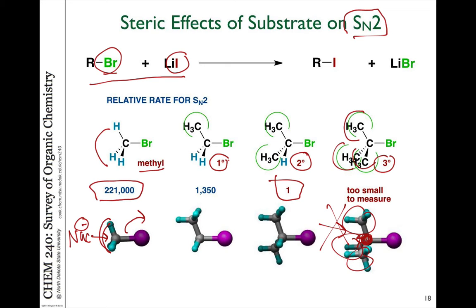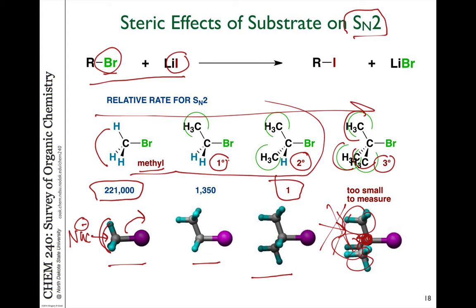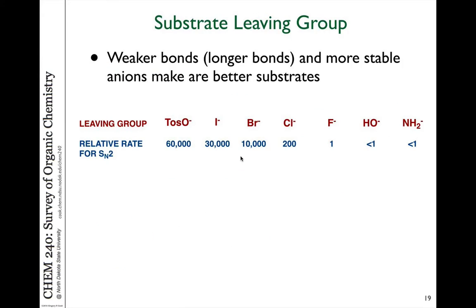It's fastest when we have no substitution on the carbon. It gets slower if it's a primary, even more slowly if it's a secondary halide, and the reaction essentially cannot occur if it's a tertiary halide. The steric effects of the substrate — the more substituted it is, the more difficult it is to do SN2 substitution reactions. General rule of thumb: only methyls, primaries, and secondaries can do SN2 reactions. Tertiaries cannot.